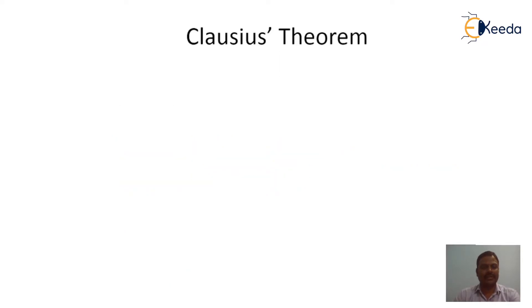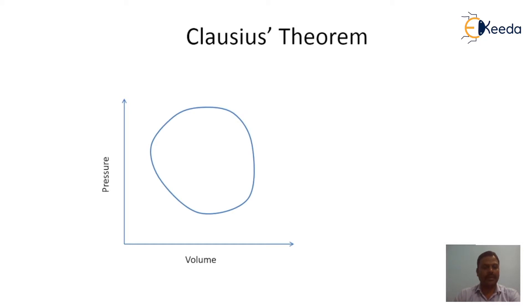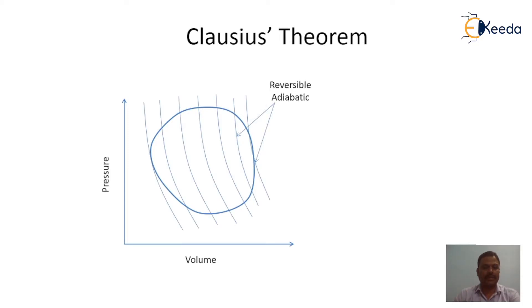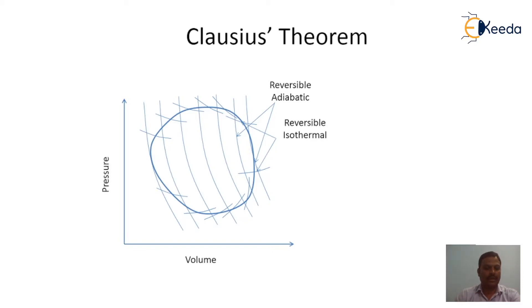Now let us discuss Clausius Theorem. Let us consider a reversible cycle and divide it into small strips by drawing reversible adiabatics. These reversible adiabatics are connected at top and bottom by drawing reversible isotherms, drawn such that the area under the curve between those two adiabatic strips is the same as the area under the original cycle between the same strips. The original cycle is thus replaced by a large number of Carnot cycles consisting of adiabatic and isothermal processes.